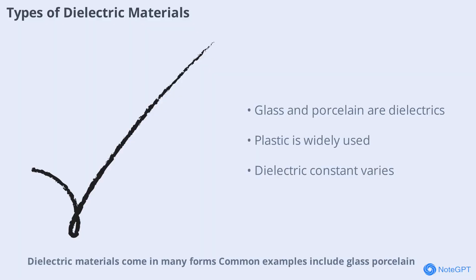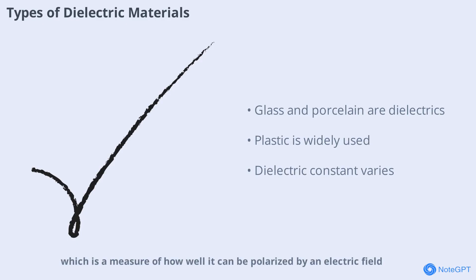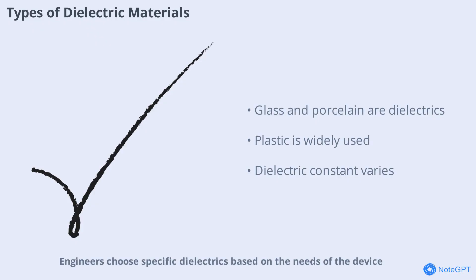Dielectric materials come in many forms. Common examples include glass, porcelain, plastic, and even dry air. Each material has its own dielectric constant, which is a measure of how well it can be polarized by an electric field. Materials with higher dielectric constants are better at storing electrical energy. Engineers choose specific dielectrics based on the needs of the device, balancing properties like strength, flexibility, and resistance to heat.